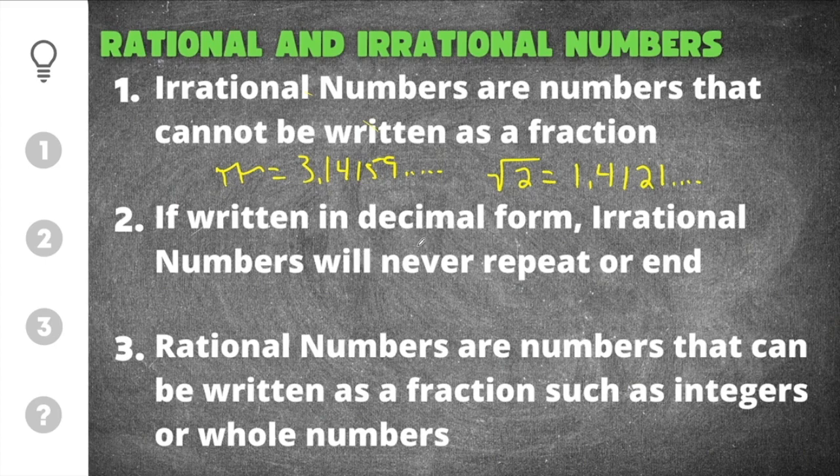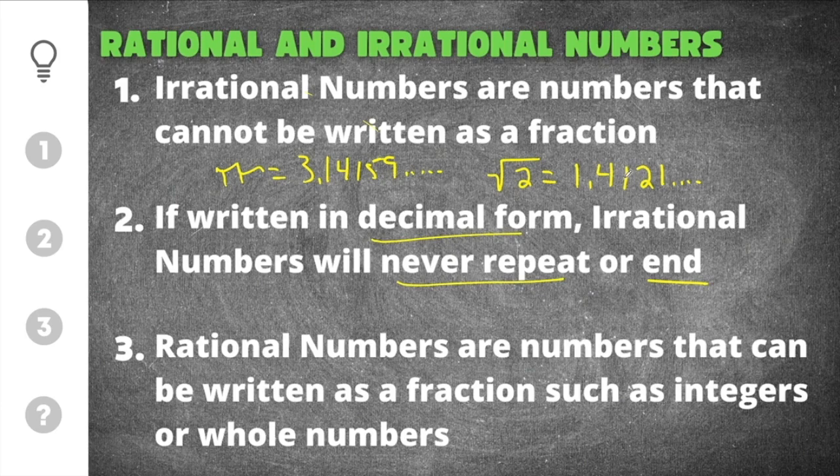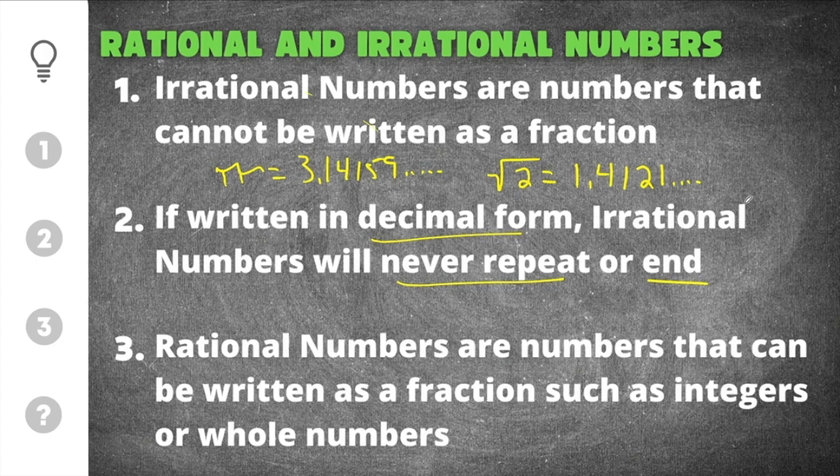If written in decimal form irrational numbers will never repeat. These numbers will never start repeating. It'll be a random string of numbers and the decimal will go on forever and it will never end.